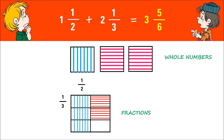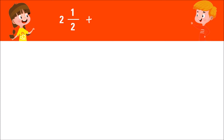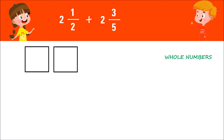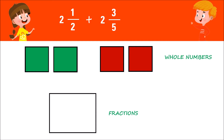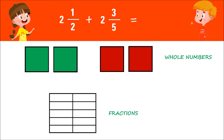One more example: two and one half plus two and three fifths. Draw two boxes for two and one half and another two boxes for two and three fifths. Shade them with the colors green and red. Next, for fractions one half and three fifths, make two columns and five rows. The product of the rows and columns will represent the new denominator. Place the green chips on the first column to represent one half, then fill three of the rows with red chips to represent three fifths.